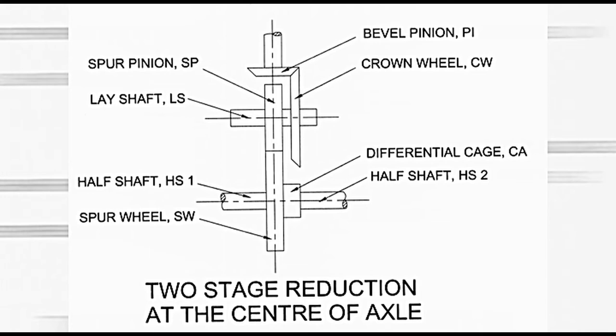The lay shaft also carries spur pinion SP. The lay shaft LS is supported at ends in the casing through ball or roller bearings. Spur pinion SP meshes with spur wheel SW. The differential cage CA is fixed on spur wheel SW. Two half shafts HS1 and HS2 are located on left and right side. This is an arrangement where both stages of reduction have been provided at the center of axle.